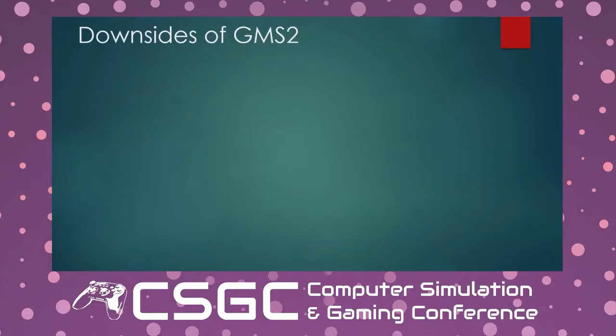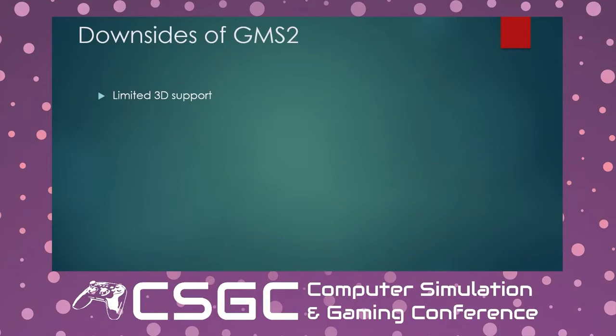There are some downsides to Game Maker. The biggest one is that its 3D support is not great. If you have in mind a full-blown 3D experience like Mario Odyssey, you probably want to use Unity or Unreal, because Game Maker is just drawing vertex surfaces one at a time, which is not practical for a detailed 3D game. Their HTML5 export is also not great — this is something people online were complaining about — so buyer beware if your target is web browser games.